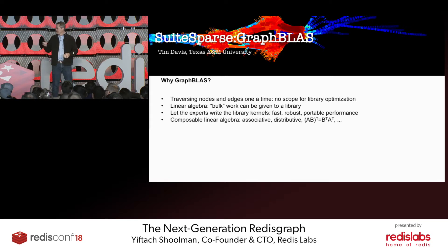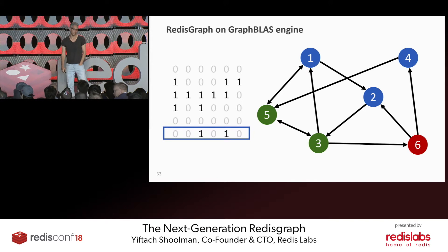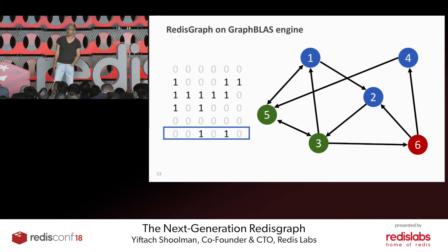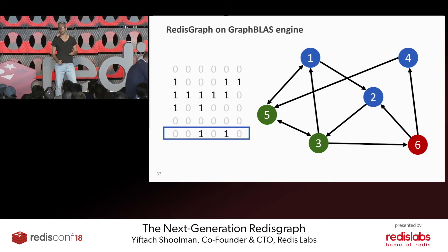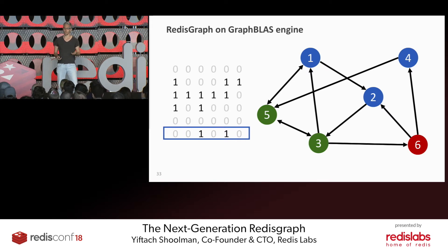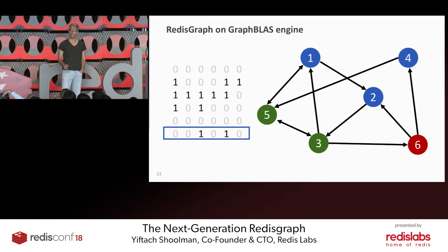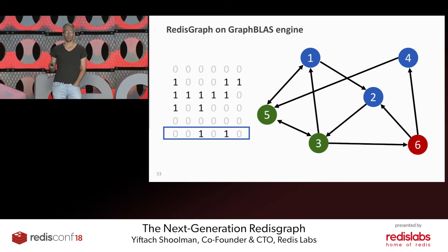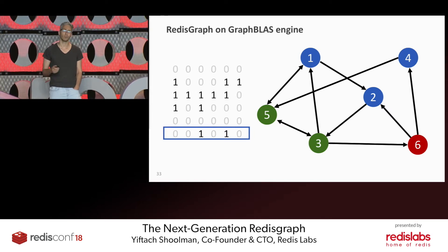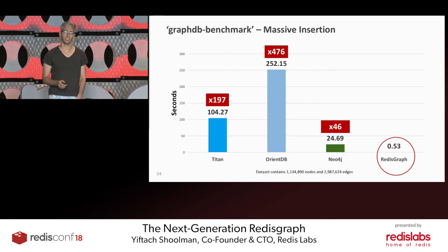For the past couple of months we've been working on replacing RedisGraph internals with sparse adjacency matrices. Once that was done, read requests for querying the graph and write requests for populating the graph were simply translated into matrix operations. For example, connecting two nodes with an edge simply translates into setting a single entry within a matrix. Graph traversal and filtering is done by matrix multiplication and addition. We conducted a number of benchmarks.